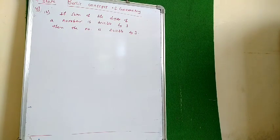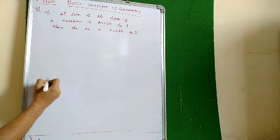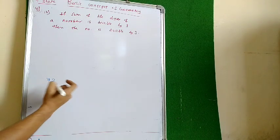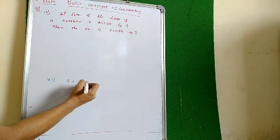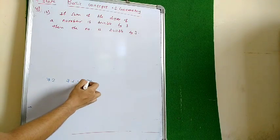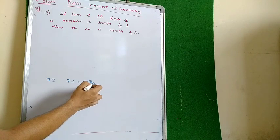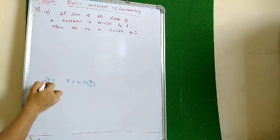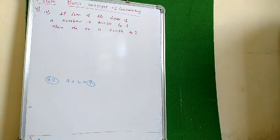In the fourth one of the eighth part, it is given that if the sum of the digits of a number is divisible by 3. For example, I have the number 72. The sum of the digits is 7 plus 2, which is 9. If this sum is divisible by 3, then the whole number is also divisible by 3. We know this — we have seen it in the fifth standard.